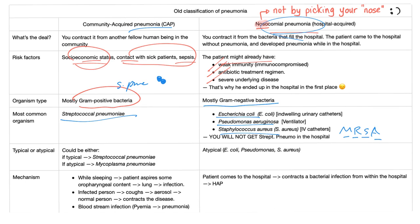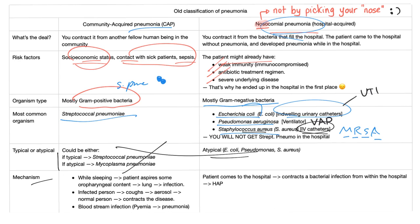For hospital-acquired pneumonia: Strep pneumo covers community acquired. For hospital acquired you have bacteria from within the hospital — E. coli, Pseudomonas, and Staph aureus, especially the ugly MRSA (methicillin-resistant Staph aureus). E. coli is common if the patient has an indwelling urinary catheter, since E. coli is the number one cause of UTIs. Pseudomonas is associated with ventilator use — called ventilator-associated pneumonia. Staph aureus and Staph epidermidis are associated with IV catheters. Transmission mechanisms include aspiration of oropharyngeal contents during sleep, droplet or aerosol infection from an infected person coughing, and bloodstream infection via septic emboli traveling to the lung.